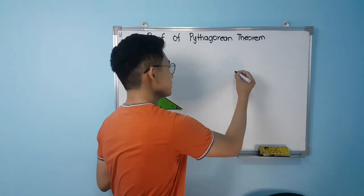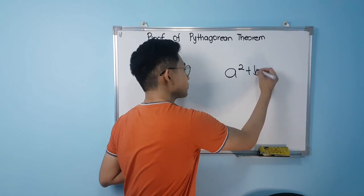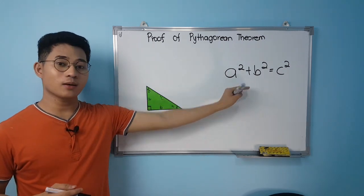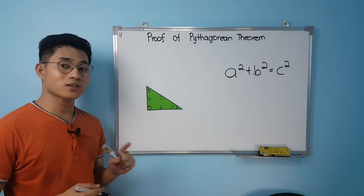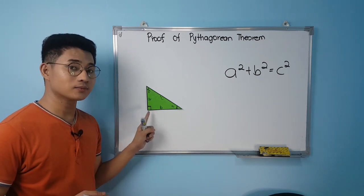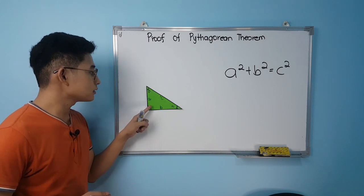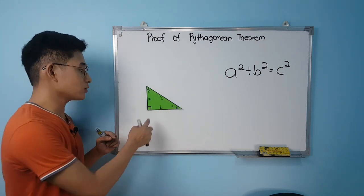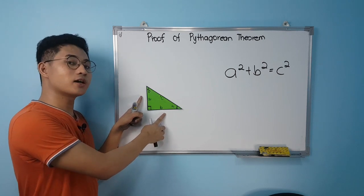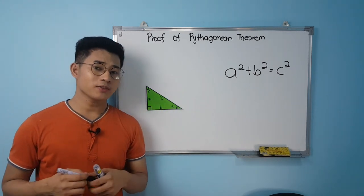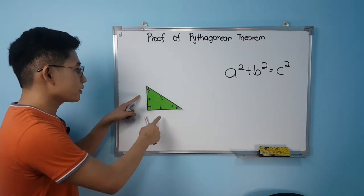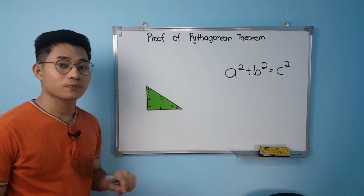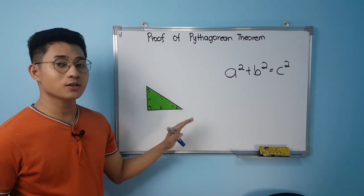The Pythagorean Theorem states that a squared plus b squared equals c squared. We can use this theorem only in a right triangle, which should have a 90-degree angle. Opposite this right angle is the longest side, which we call the hypotenuse. Adjacent to the right angle are the legs of the right triangle. The theorem says the sum of the squares of the legs equals the square of the hypotenuse, and we are going to prove that this is true.